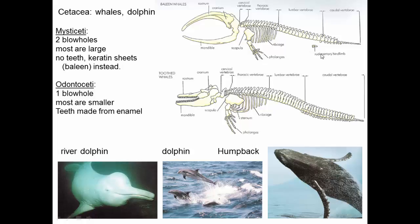Mysticetes don't have hind limbs, but they have leftover bones inside their body from where their ancestors did. The second major group are odontocetes — they have one blowhole, most are smaller, like dolphins and porpoises, they have teeth made from enamel, and they hunt larger prey. Odontocetes have completely lost the remnant hind limb bones. Mysticetes include humpback, blue, and right whales; odontocetes are more like dolphins and porpoises.